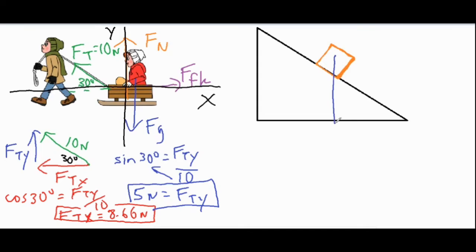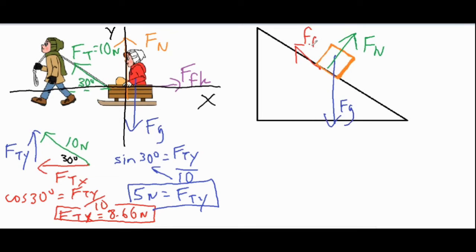For the next scenario, we still have gravity straight down, a normal force straight up perpendicular to the ramp surface, and if the object is at rest it would tend to slide toward the bottom right — so the force of static friction opposes that slide.